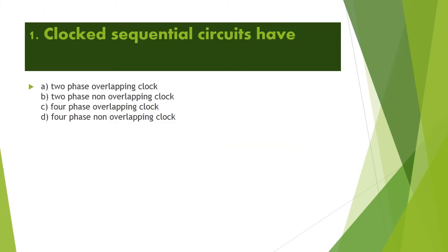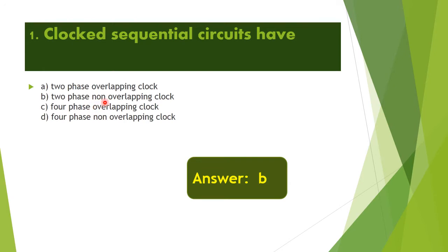First question: Clocked sequential circuits have — Option A: 2-phase overlapping clock. Option B: 2-phase non-overlapping clock. Option C: 4-phase overlapping clock. Option D: 4-phase non-overlapping clock. The correct answer is Option B — 2-phase non-overlapping clock.